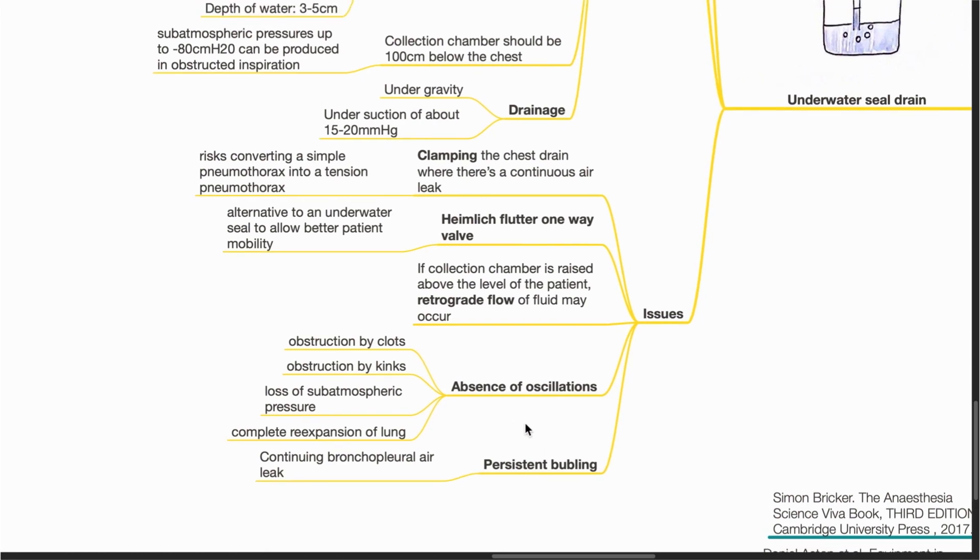When there is absence of oscillations in the drainage tube, there could be several causes such as obstruction by clots or kinks, loss of subatmospheric pressure, or complete re-expansion of the lung.